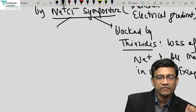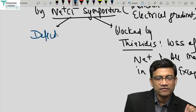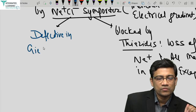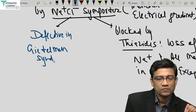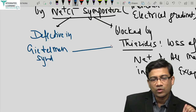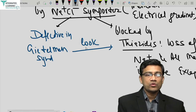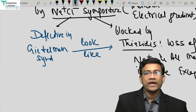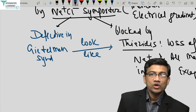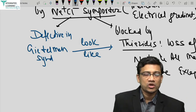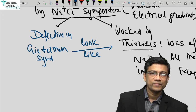This symporter can also be defective — it is defective in Gitelman syndrome. That is why Gitelman syndrome looks like thiazide effect: loss of all ions except calcium. In contrast, Bartter syndrome causes loss of all ions, while in Gitelman syndrome calcium is not lost.